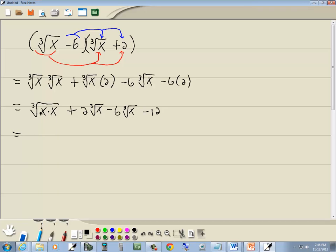Our index is 3, we're looking for a set of 3 of something. Well, we only have 2 x's, so we can't bring anything out. So this is the cube root of x squared.